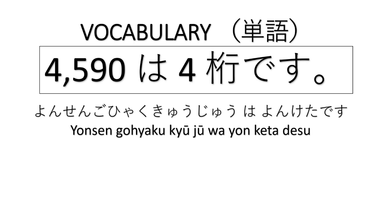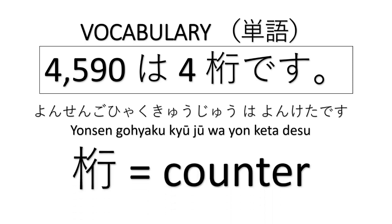We use the counter keta to say that a number has a certain amount of digits. For example, in this sentence: 4590 has four digits. We use the counter keta and add it to say that a certain number has a certain amount of digits.